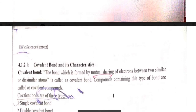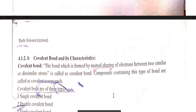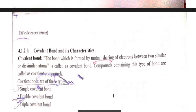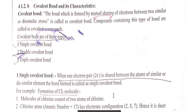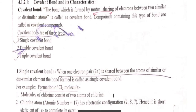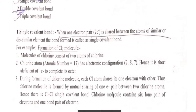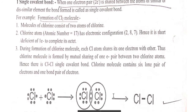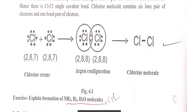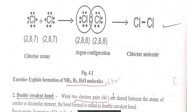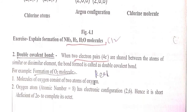Covalent bond — the most important keyword is mutual sharing of electrons. There are three types: single, double, and triple covalent bond. A single covalent bond involves sharing of one pair of electrons, that means two electrons. Example: formation of chlorine molecule (Cl2), denoted by a single line. Other examples of single covalent bond are NH3, H2, and H2O.